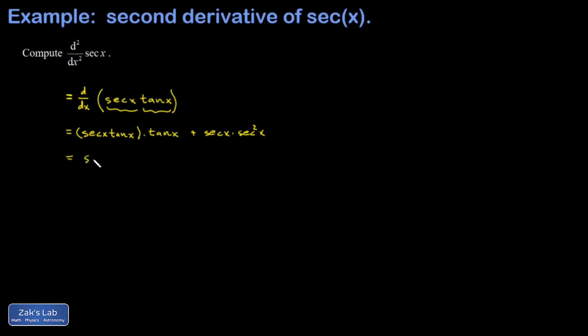Then I clean things up a little bit. In my first term I have secant x tangent squared x, and in my second term I have secant cubed x. And we're done.